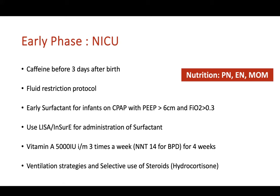In the NICU early phase, other interventions to prevent BPD include: early caffeine — the earlier it is given the lower the risk of BPD; fluid restriction — always work on lower fluid volumes; and restricted total enteral and parenteral nutrition. If surfactant was not given in the labor room, it should be given for all babies on CPAP requiring PEEP above 6 and/or FiO2 above 30%, preferably by LISA. Vitamin A given IM as 5000 IU three times a week in the first four weeks has a number needed to treat of 14 to prevent one BPD.